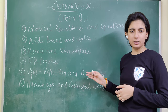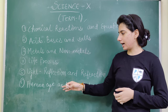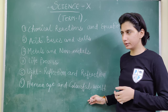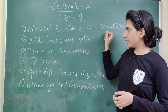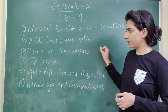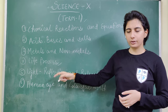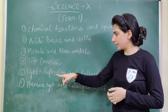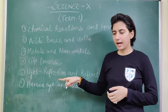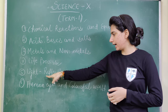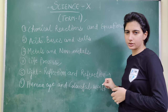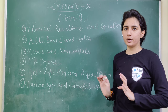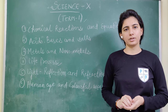...is Light Reflection and Refraction, and the last one is Human Eye and Colorful World. The first three chapters are from chemistry, Life Processes and Human Eye are from biology, and Light Reflection and Refraction belongs to physics, which is very important.